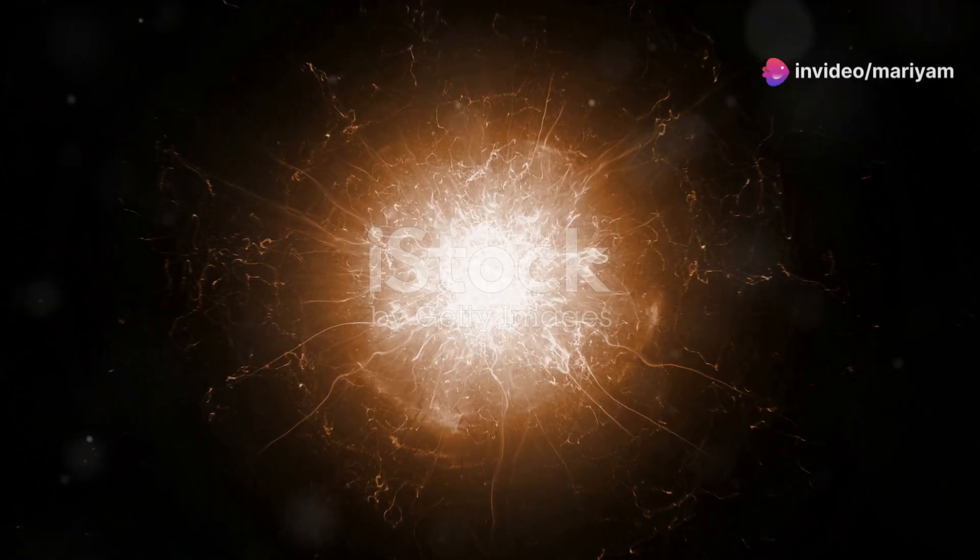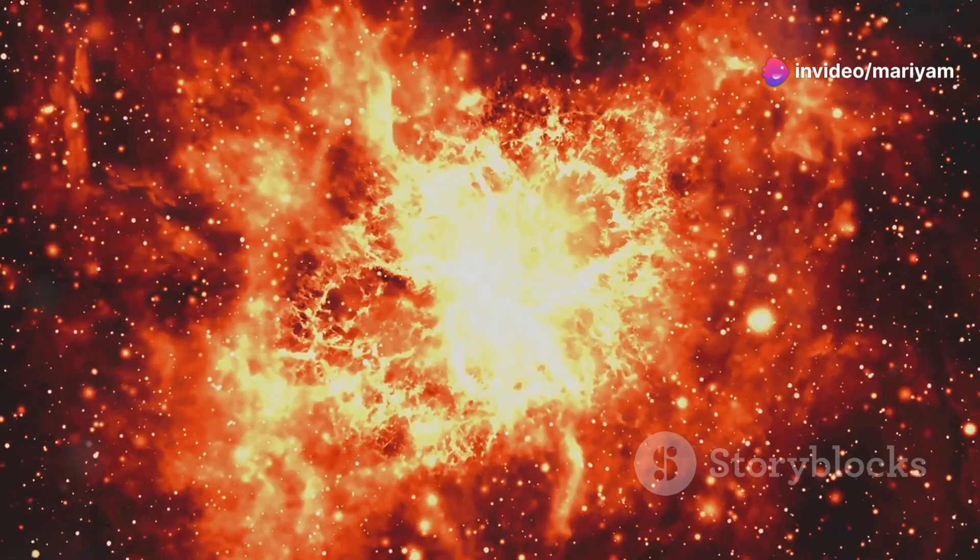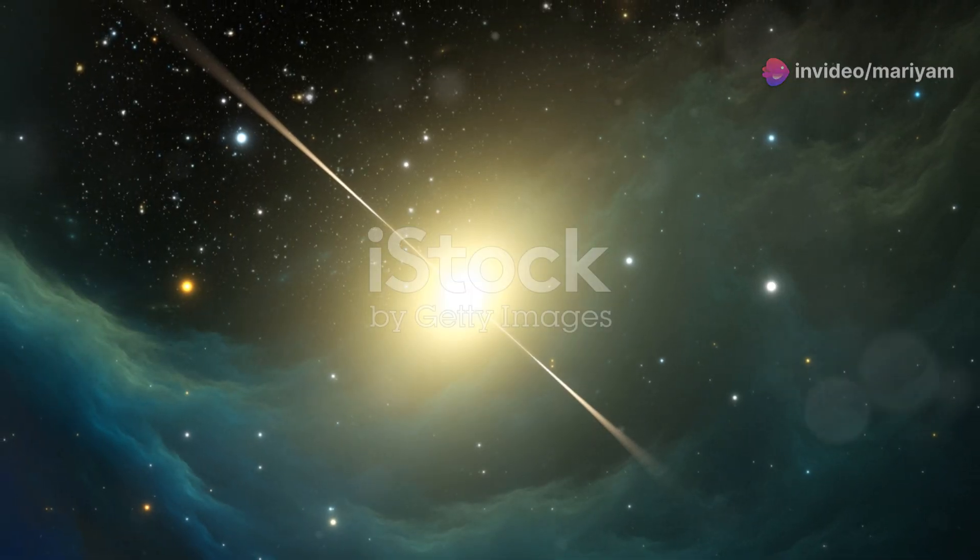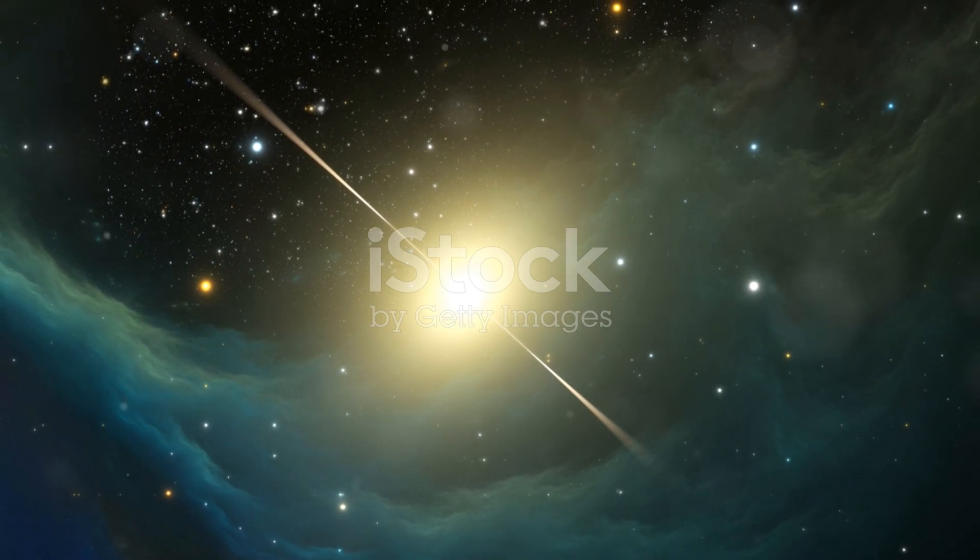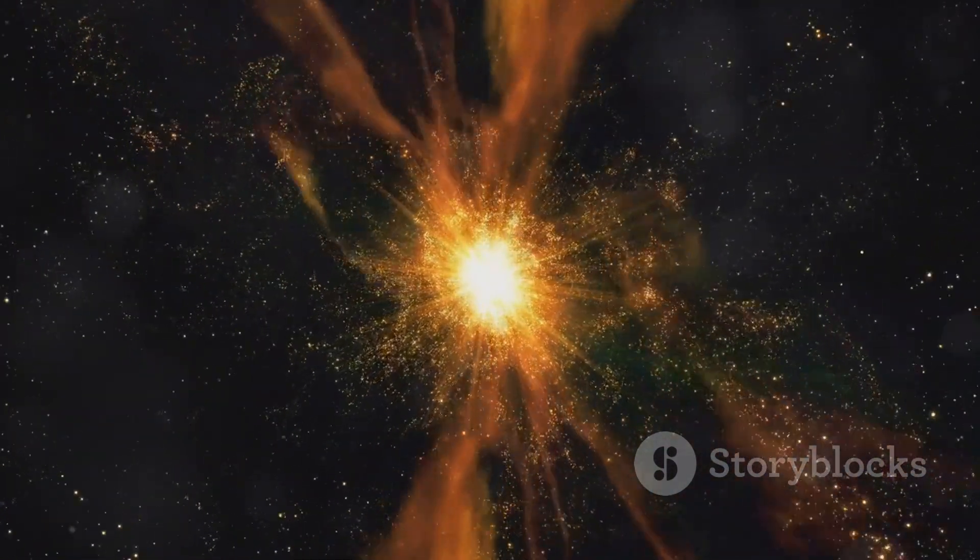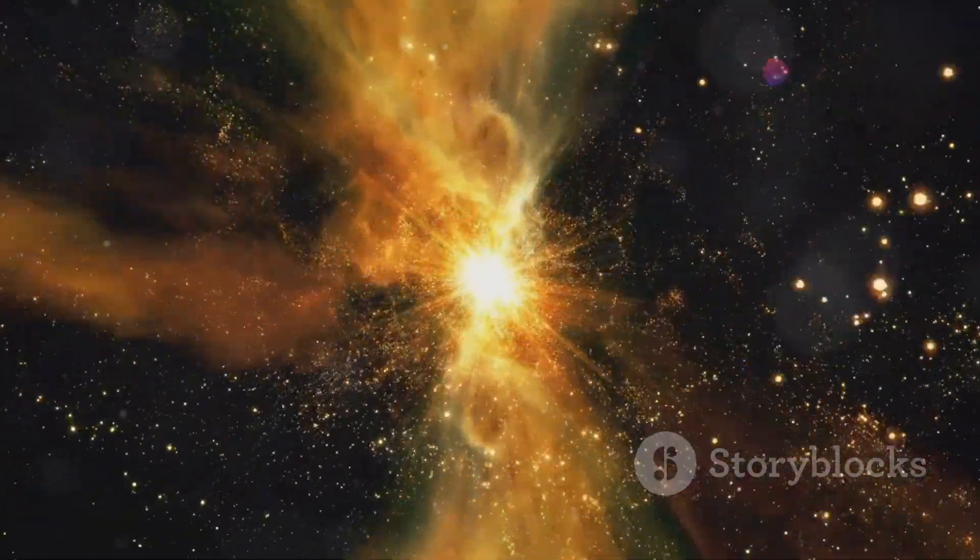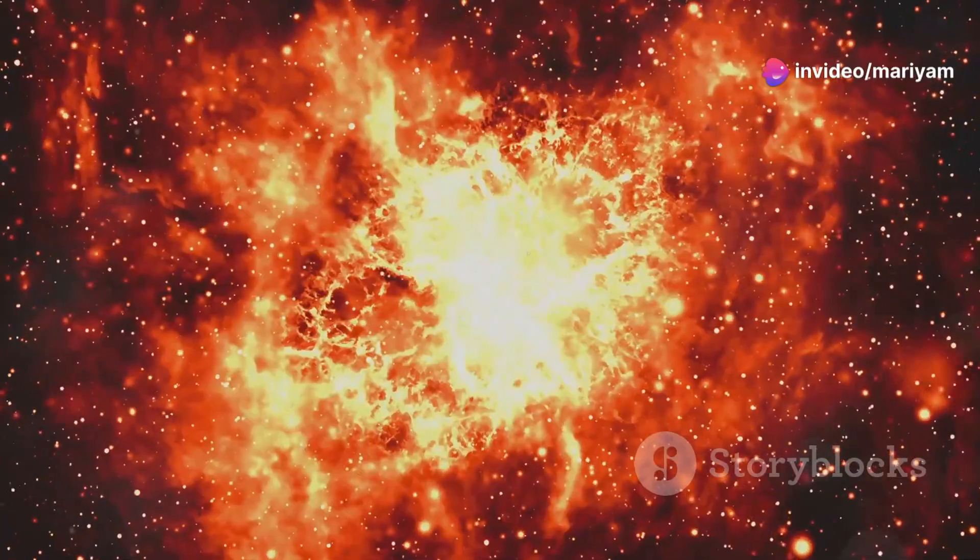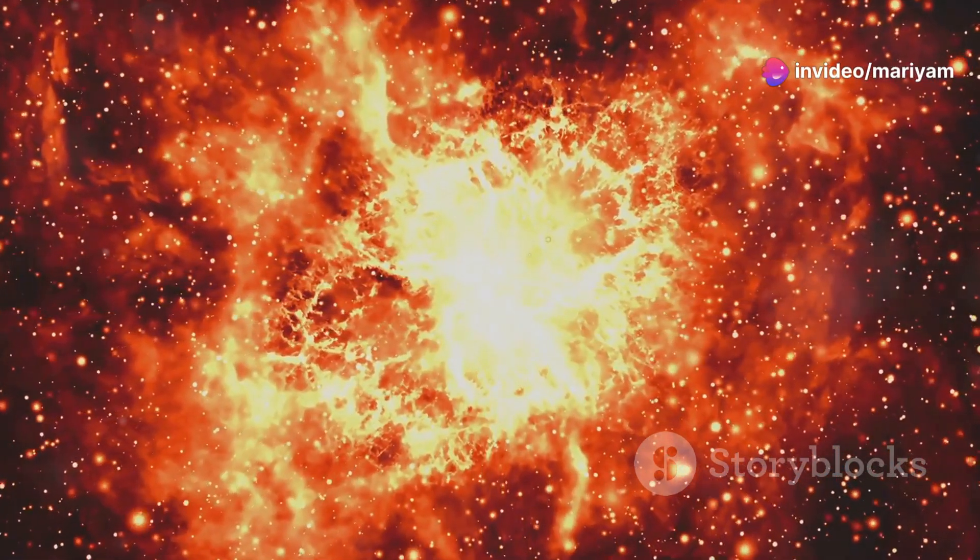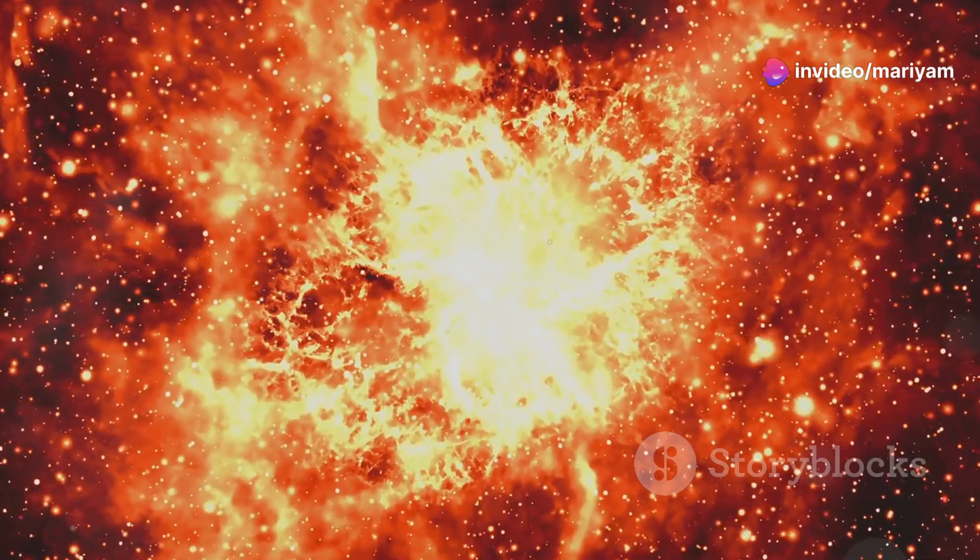The birth of a pulsar is a dramatic event, marking the end of one stellar life and the beginning of another. It all starts with a massive star, at least eight times the mass of our Sun. When such a star exhausts its nuclear fuel, it can no longer support itself against its own gravity. The result is a catastrophic collapse, followed by a spectacular explosion known as a supernova.